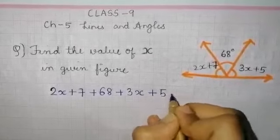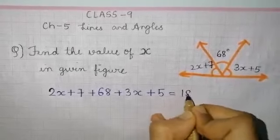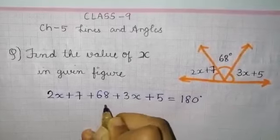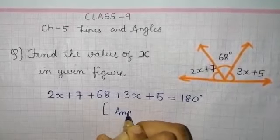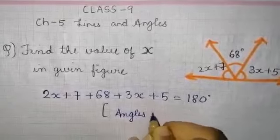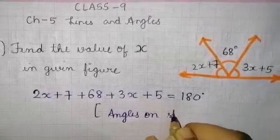This is a lines and angles question. You know that angles on a straight line always sum to 180 degrees.